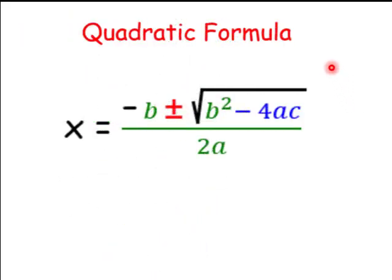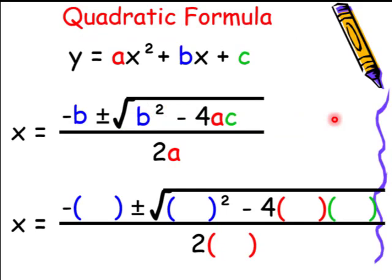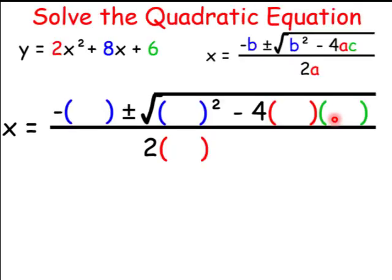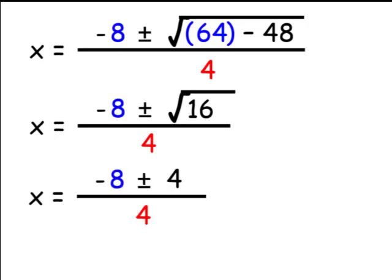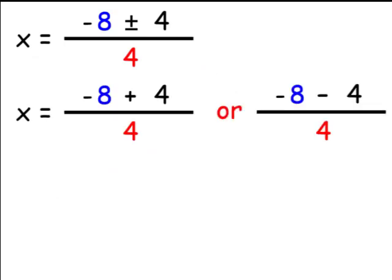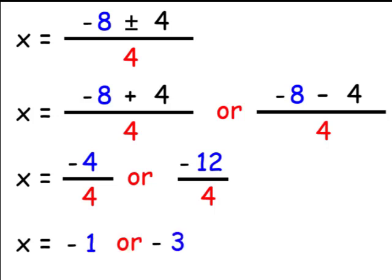When solving quadratic equations, you can use the quadratic formula instead of completing the square — this is an easier method. All you have to do is have the equation in standard form and substitute your values: first substitute the b's, then the a's, then the c's. In this case, b is 8, a is 2, and c is 6. Simplifying: 8 squared is 64, and negative 4 times 2 times 6 is minus 48. 64 minus 48 is 16. The square root of 16 is 4. We have negative 8 plus or minus 4 all over 4, giving negative 8 plus 4 over 4 or negative 8 minus 4 over 4, which is negative 1 or negative 3.